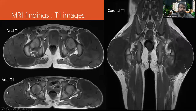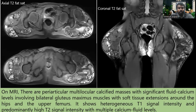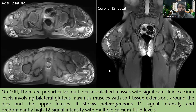We then subjected the patient to MRI. These were the images that were obtained — these were the T1 images and these were the T2 fat sat images. On MRI there were periarticular multi-locular calcified masses with significant fluid-calcium level involving bilateral gluteus maximus muscle with soft tissue extension along the hip and the upper thigh. It showed heterogeneous T1 signal intensity and predominantly high T2 signal intensity with multiple calcium-fluid levels.